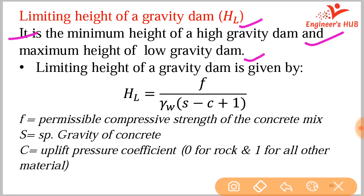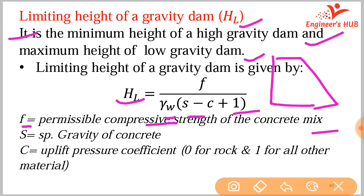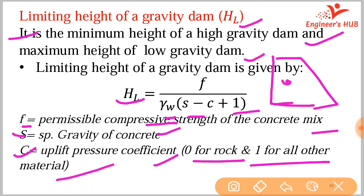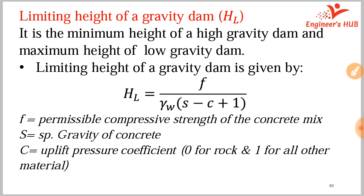The limiting height of a gravity dam is calculated using the formula: H_L equals F divided by gamma_w, multiplied by (S minus C plus 1). Here F is the permissible compressive strength of the concrete mix used to build the dam. S is the specific gravity of the concrete, and C is the uplift pressure coefficient — zero for rock foundation and one for all other materials.